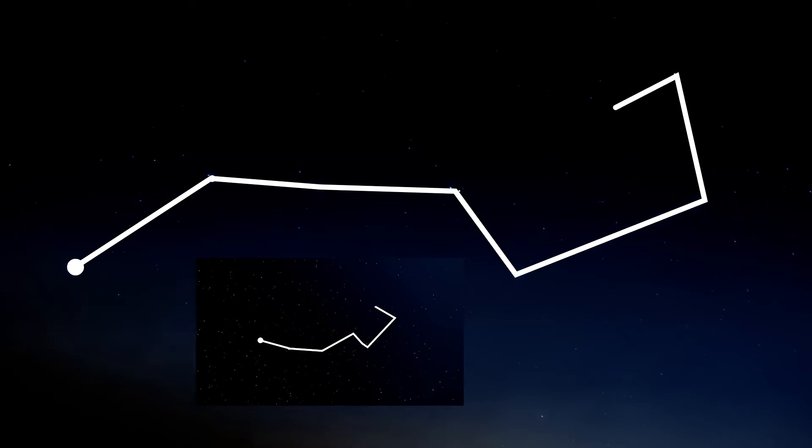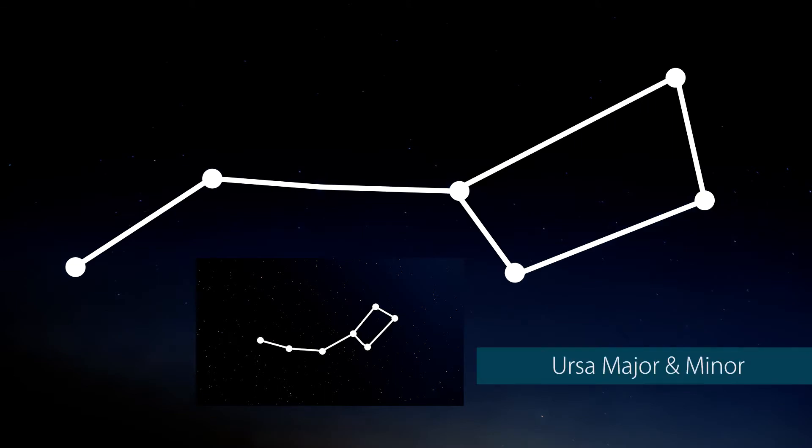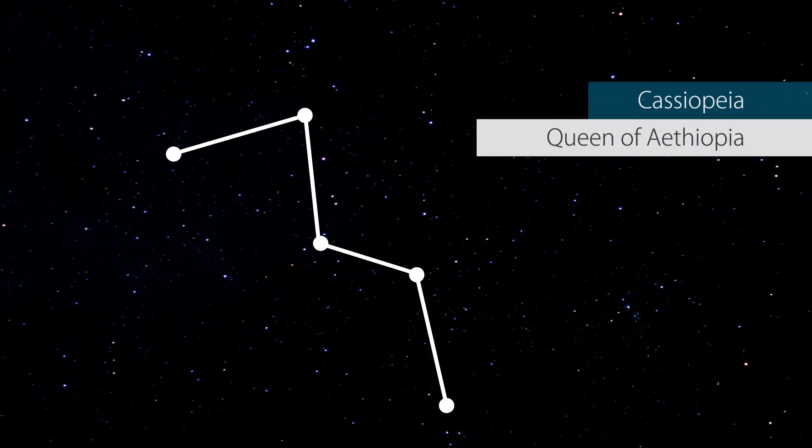The two constellations that you can always see in the night sky from Exmoor are Ursa Major, also known as the Great Bear or the Big Dipper or the Saucepan or the Plough. And you can also see Cassiopeia, which appears like a giant W in the sky.